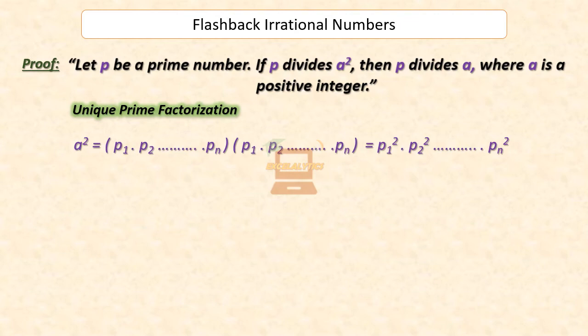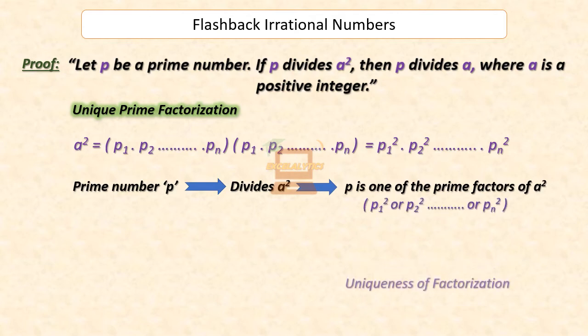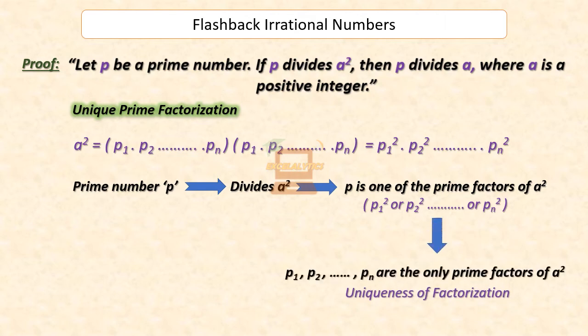Now, we are given that a prime number P divides A squared. Therefore, from the fundamental theorem of arithmetic, it follows that P must be one of the prime factors of A squared. However, from the uniqueness part of the fundamental theorem of arithmetic, we realize that the only prime factors of A squared are P1, P2 and so on till Pn.